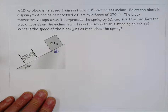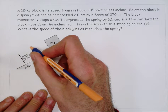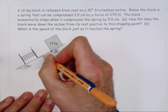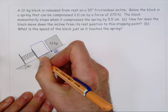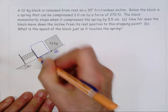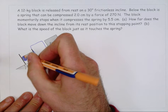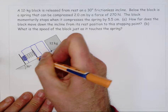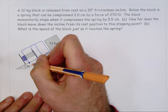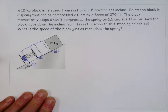I'm going to call this location A. Then the block slides down the ramp and eventually at some point it's just about to hit the spring — I'll call that location B. Then it compresses the spring and temporarily the block comes to rest, which I'm going to call location C. Those are the three important locations I would identify here.